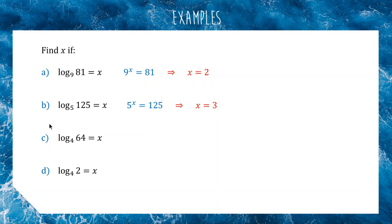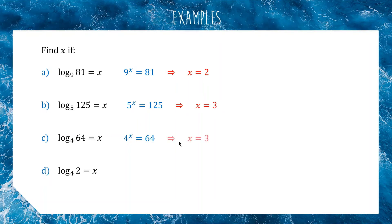Same trick for C — we're going to rewrite this logarithmic expression as 4 to the power of x equals 64. Is 64 a power of 4? Well, 4 squared is 16, and if we multiply by 4 again we get 64. So once again the answer is 3, because 4 to the power of 3 equals 64.